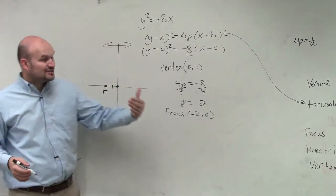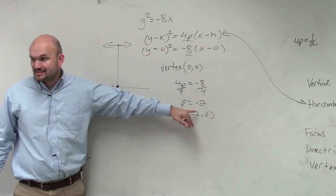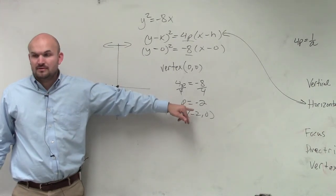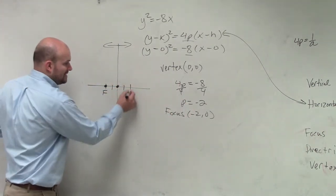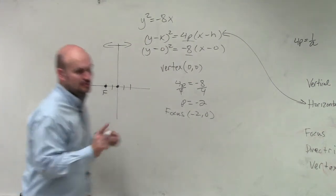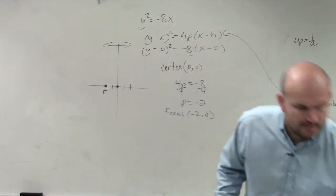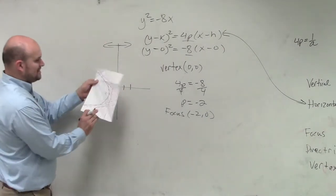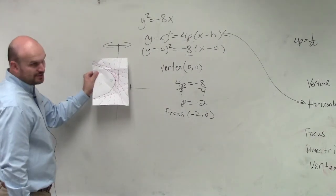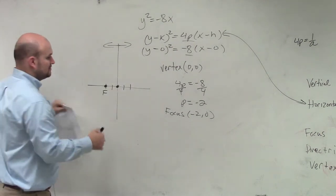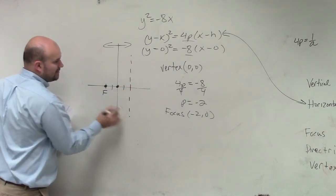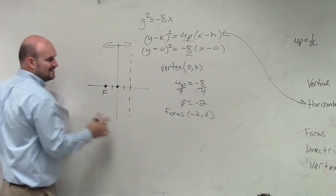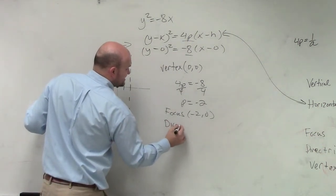And then the directrix is the opposite of p. What is the opposite of negative 2? Positive 2. So we go to the right 2. Now, hold on a second. Here's your parabola you guys created. If my parabola opens up to the right, my directrix is a vertical line. Does everybody see that? So how do we write the equation of a vertical line? That's going to be x equals. Good.